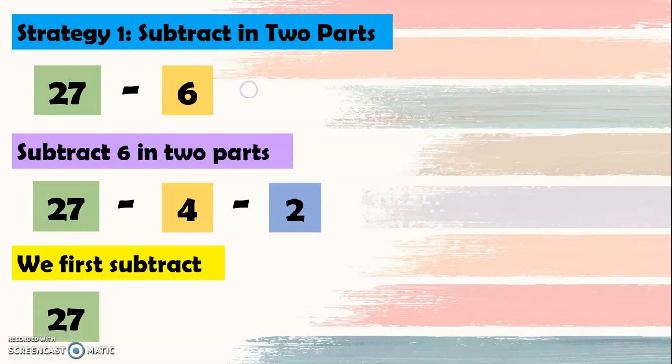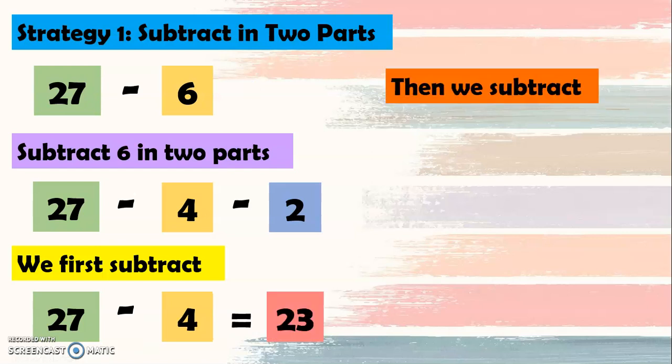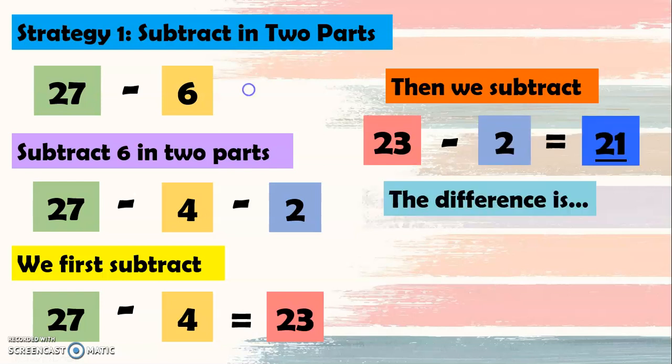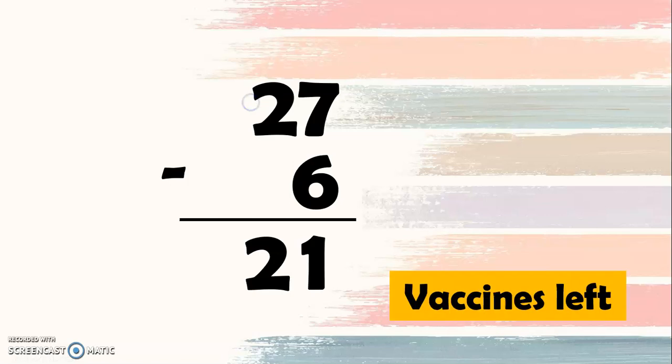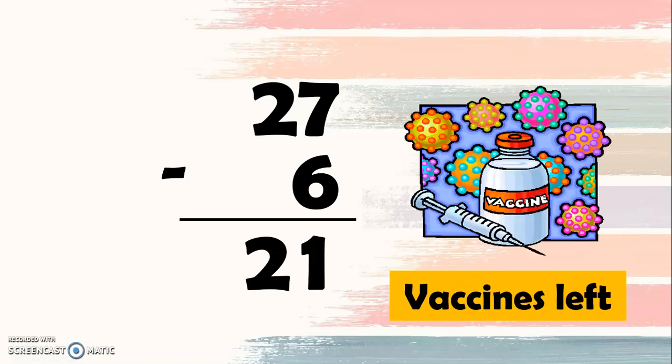Now, we first subtract 27 minus 4 equals 23. Then we subtract 23 minus 2 equals 21. So the difference is 27 minus 6 equals 21. So 21 vaccines left for Dr. Rex.